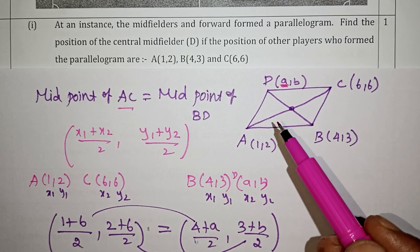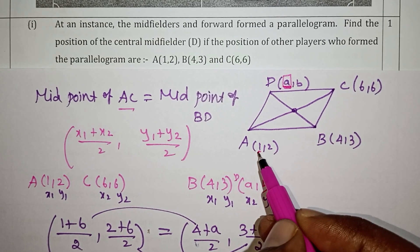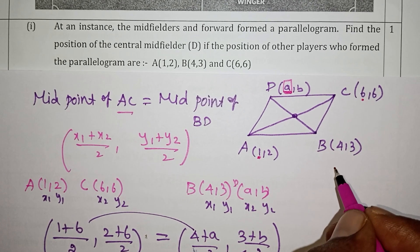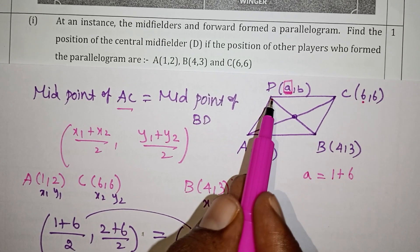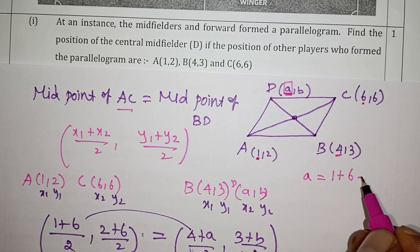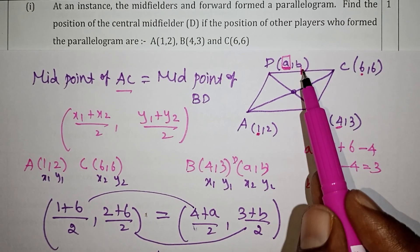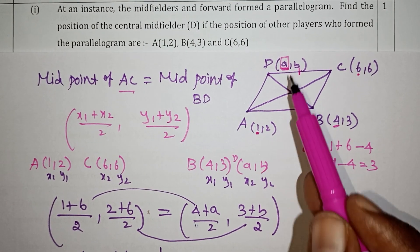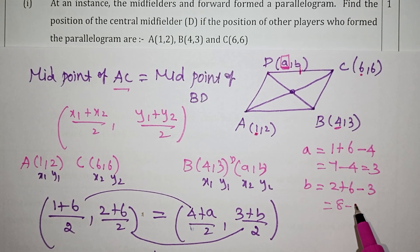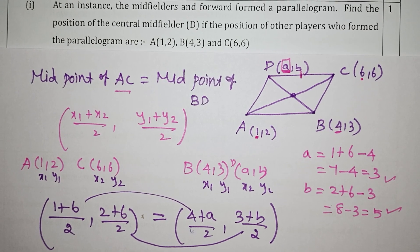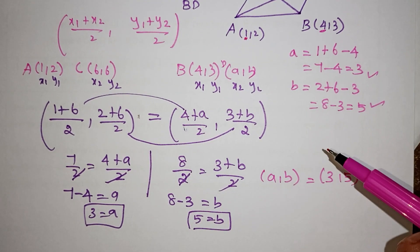Here's a short trick: for the x-coordinate (abscissa), take 1 (from A), add the x of C which is 6, then subtract x of B which is 4: 1+6−4 = 3. For the y-coordinate, take 2 (from A), add y of C which is 6, subtract y of B which is 3: 2+6−3 = 5. So (3,5) is confirmed. You can solve this in about 1 minute.